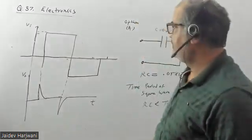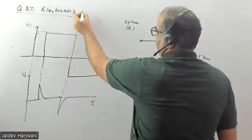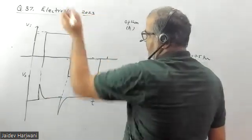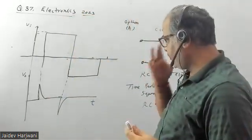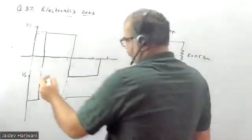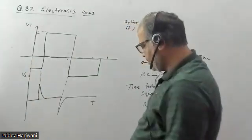Hello students, let's see this question of electronics from GATE 2023, question number 37. In this question they have given you a square wave as input and they have given you the output waveform.